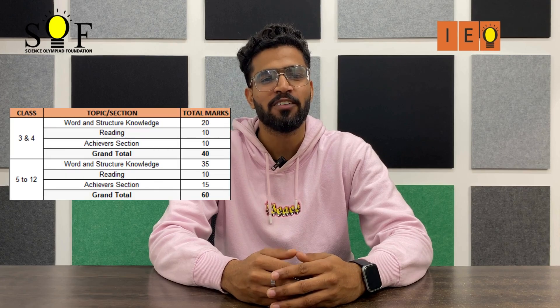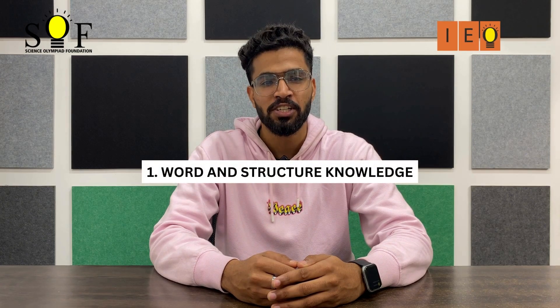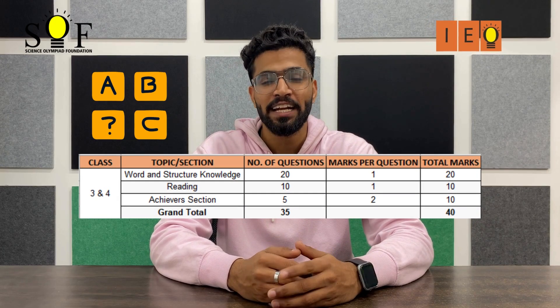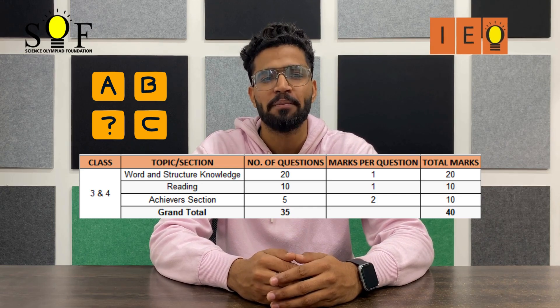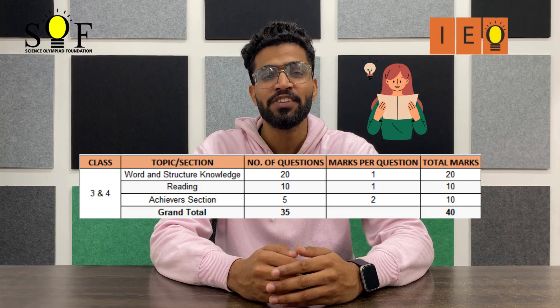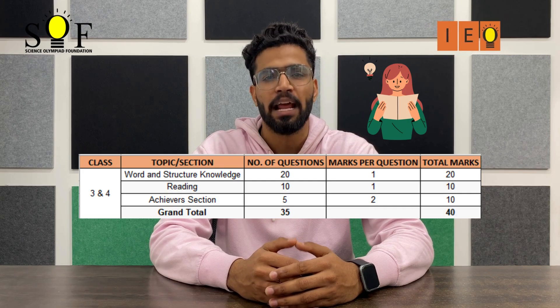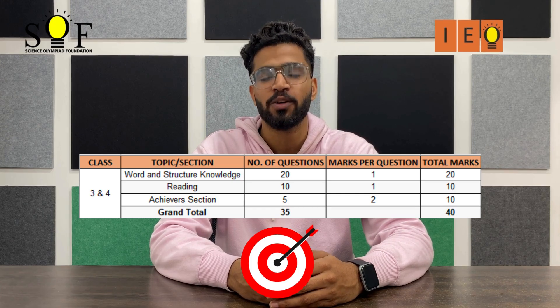SF IEO is going to have a total of 40 marks for classes 3 and 4, whereas 60 marks for classes 5 to 12. These marks will be divided into 3 sections: Word and Structure Knowledge, Reading, and Achievers sections. For classes 3 and 4, Word and Structure Knowledge section will have 20 questions carrying 1 mark each, totalling 20 marks. Reading section will have 10 questions carrying 1 mark each, totalling 10 marks. Achievers section will have 5 questions carrying 2 marks each, totalling 10 marks.